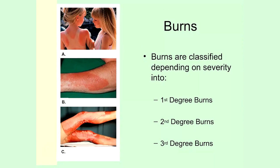The next most severe type is a second degree burn, represented in picture B. One thing you may notice is that there's a blister that has formed along with that burn. Blisters are the hallmark of second degree burns because a second degree burn is more severe — we've damaged not just the epidermis, but also the dermis, and that's actually what causes the blisters to form.